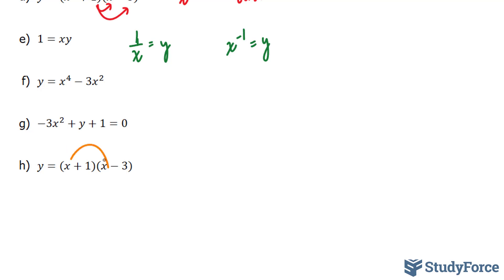where you have x times x, x times negative 3, and so on, you would end up with a final equation that has x to the power of 2. X to the power of 2 means that it's quadratic. Therefore, h represents a quadratic equation.